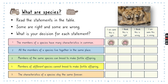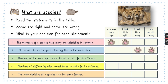So let's have a look at the answers. If you chose 'I'm sure this is right' for the first statement, you're correct — members of a species have many characteristics in common. For statement two, all members of a species live together in the same place, if you chose 'this is wrong' then you're correct. We are human beings and we don't live in the same place — there are human beings all over the world, and it's the same with lions.